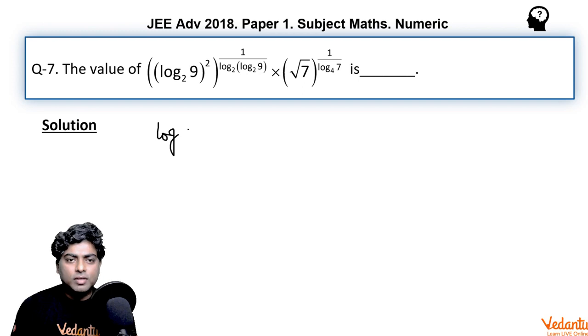We can write here, as you can see, log 9 to the base 2 whole power 2. Now according to a property of log, if we interchange the base and index, then the value of log becomes a reciprocal, meaning 1 upon log.